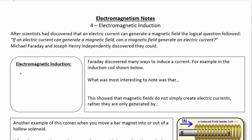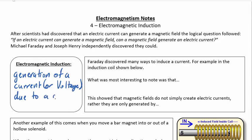And electromagnetic induction is basically the generation of a current or voltage due to a changing magnetic field.